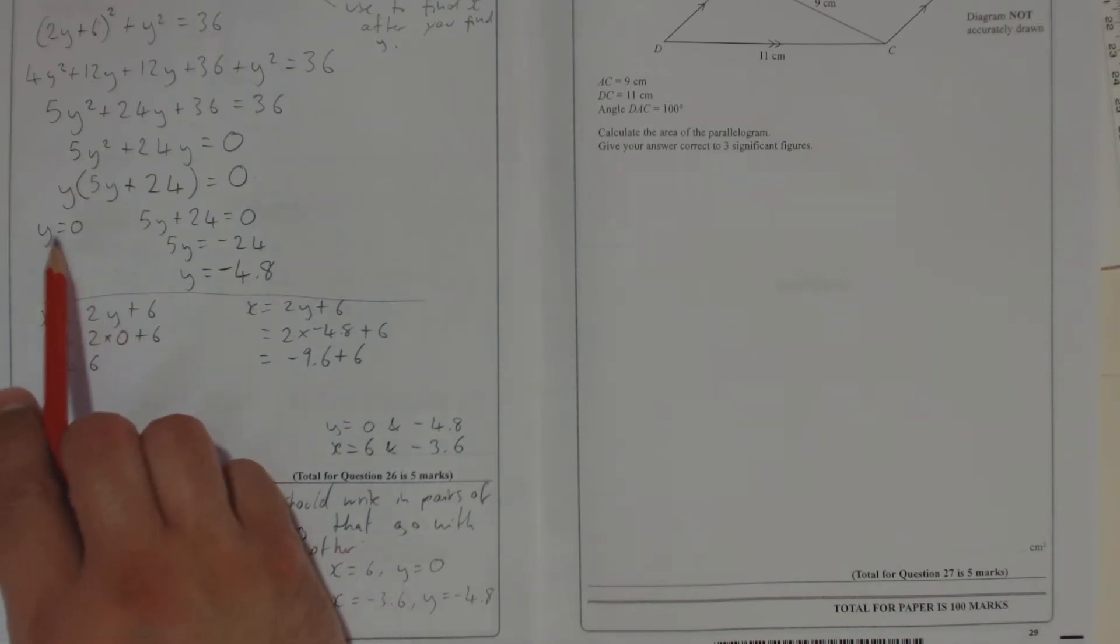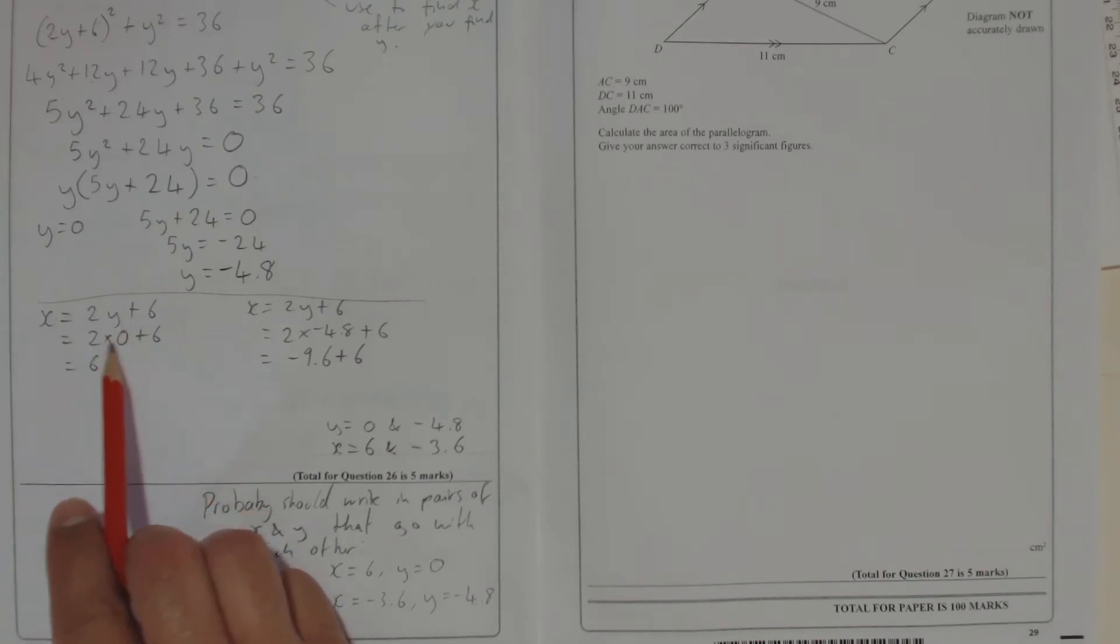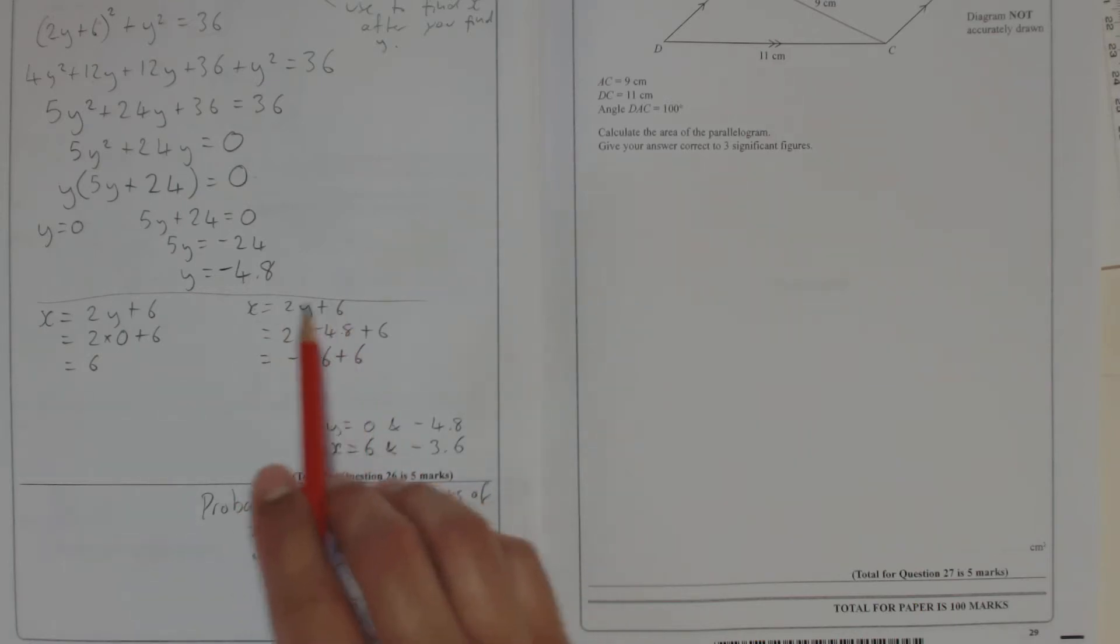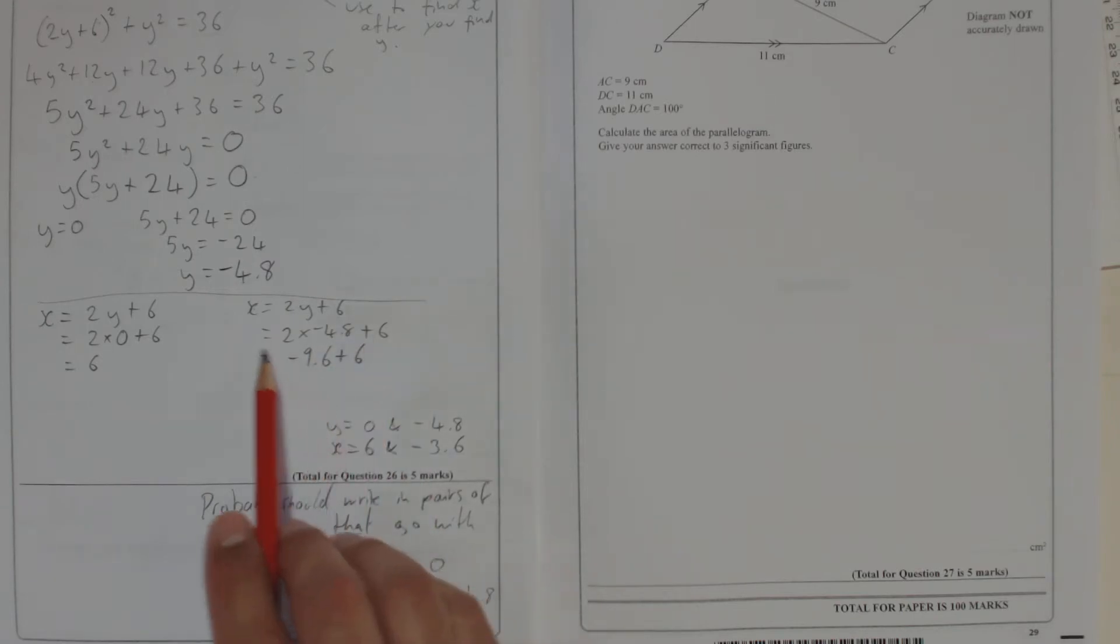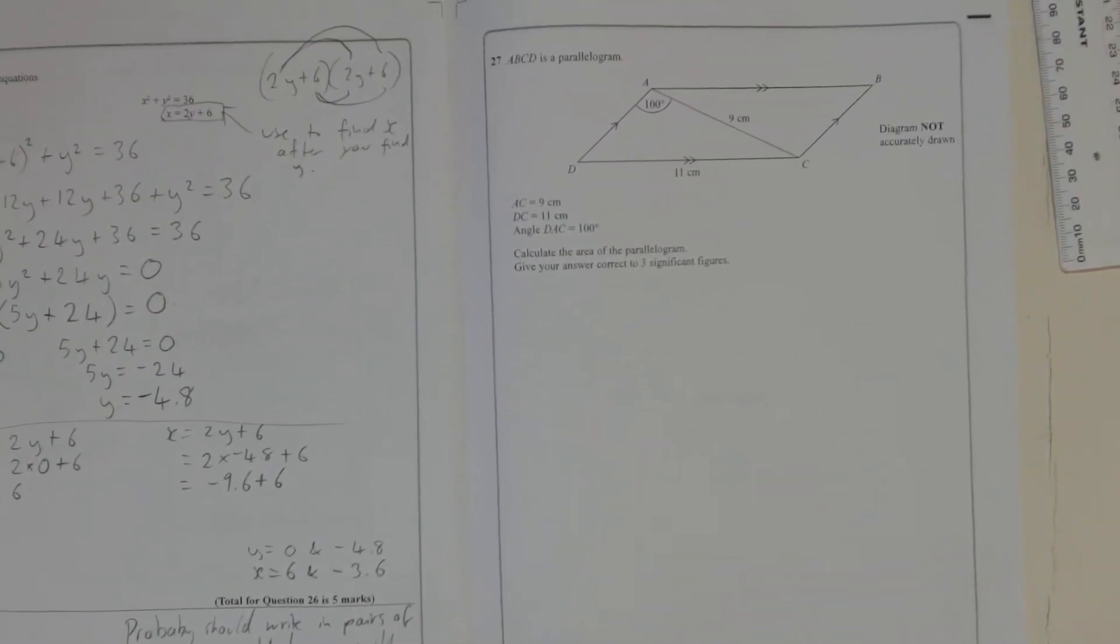Looking at the mark scheme, they seem to want you to pair up appropriate values that go with each other for x and y. For example, at the end we found out that y is 0, and using that y equals 0, when we substituted it into this here, we got x as being 6. Therefore, 0 and 6 go with each other. So you can write it like this: x equals 6, y equals 0. That's one answer. And then the other one is where you put minus 4.8 in as y and you get out minus 3.6. So that's a pair as well: minus 3.6 for x and y equals minus 4.8.